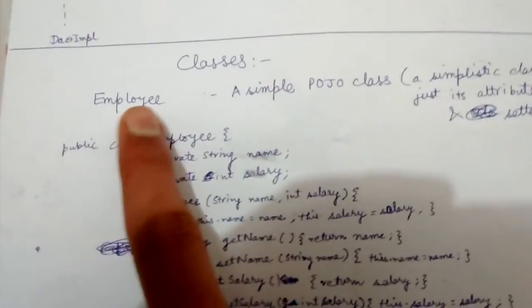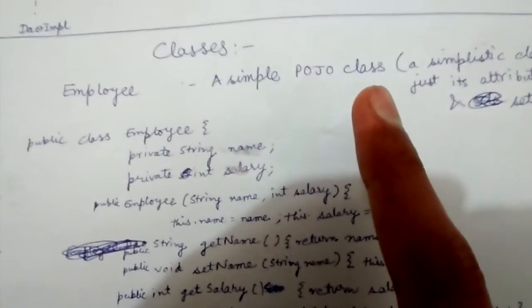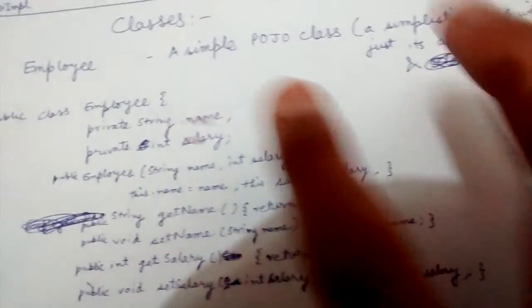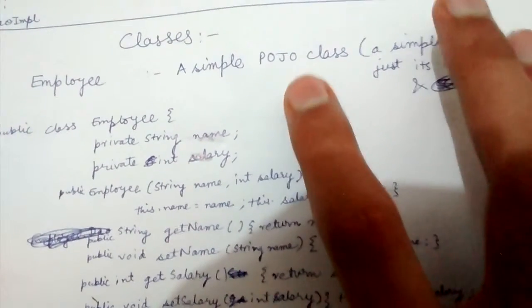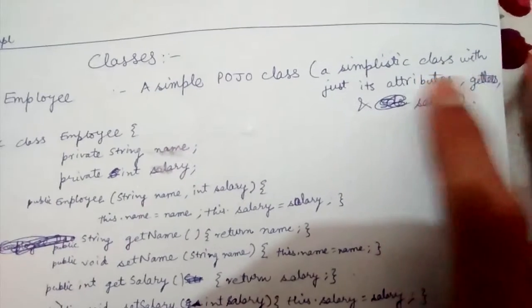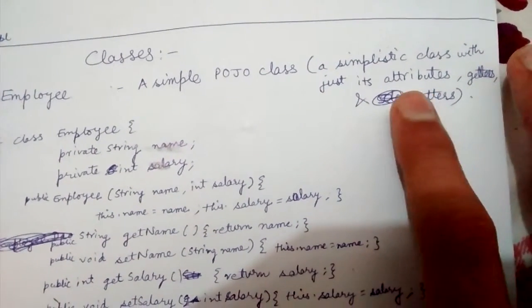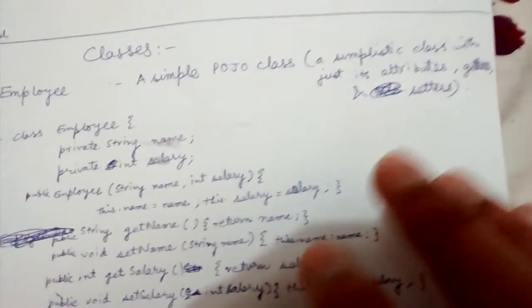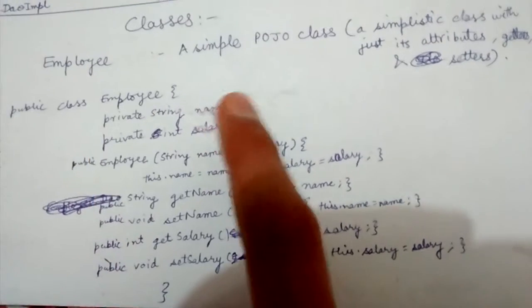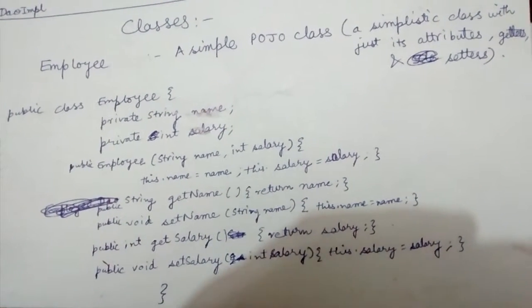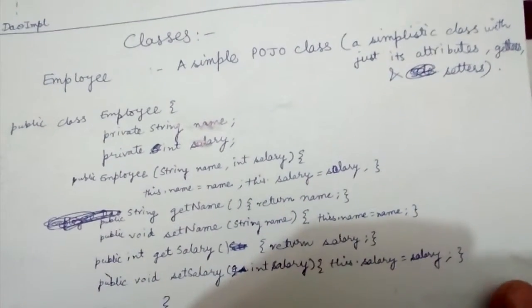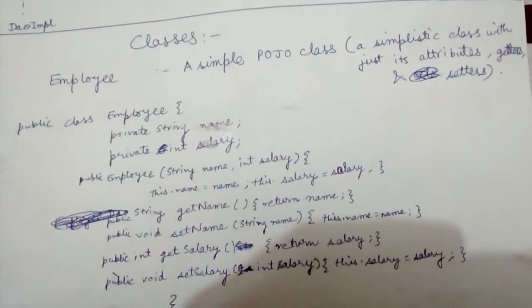Now let's look at the classes in this design pattern. First is our Employee class — it's a simple POJO class. POJO stands for Plain Old Java Object. It's a very simplistic type of class that just has some attributes and their corresponding getters and setters. Our Employee class has two attributes, name and salary, and their getters and setters, plus a constructor. No special methods — nothing extra. This is called a Plain Old Java Object, or POJO class.